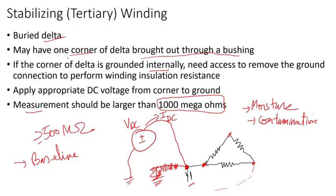This test is very important. Some people will say tertiary, but there is a difference between stabilizing and tertiary. Tertiary winding is loaded, connected to station service, and all three terminals of the delta are brought out. Stabilizing winding is really just for harmonic, triple harmonic suppression, and zero sequence currents.